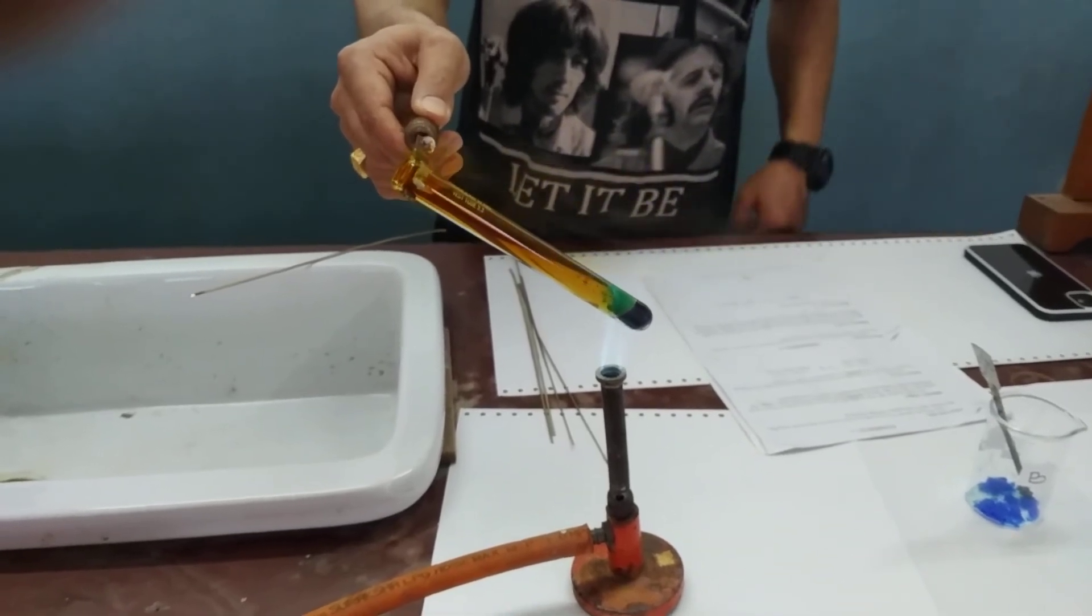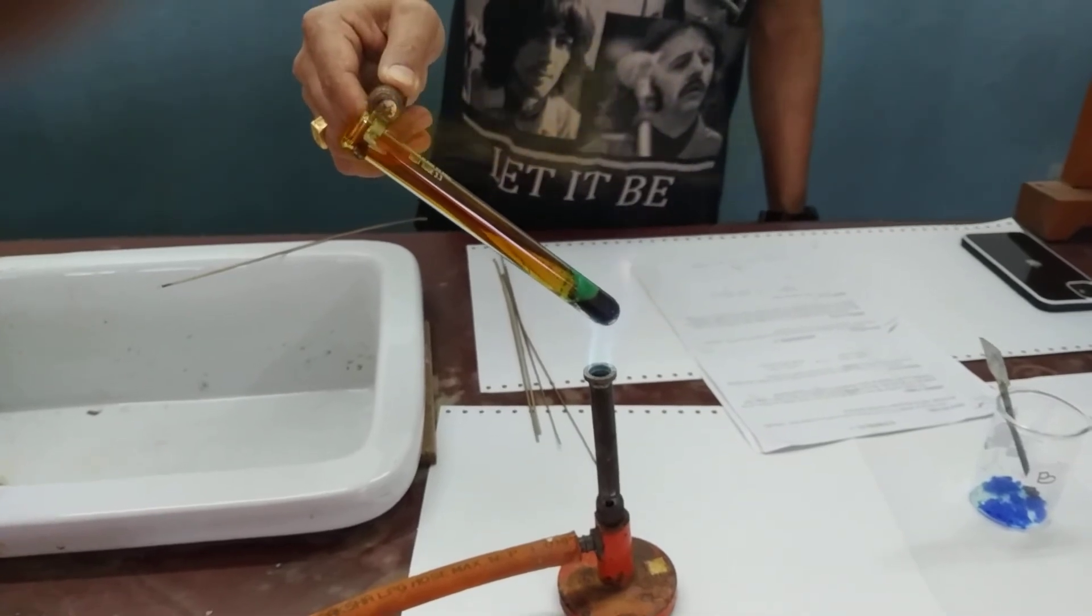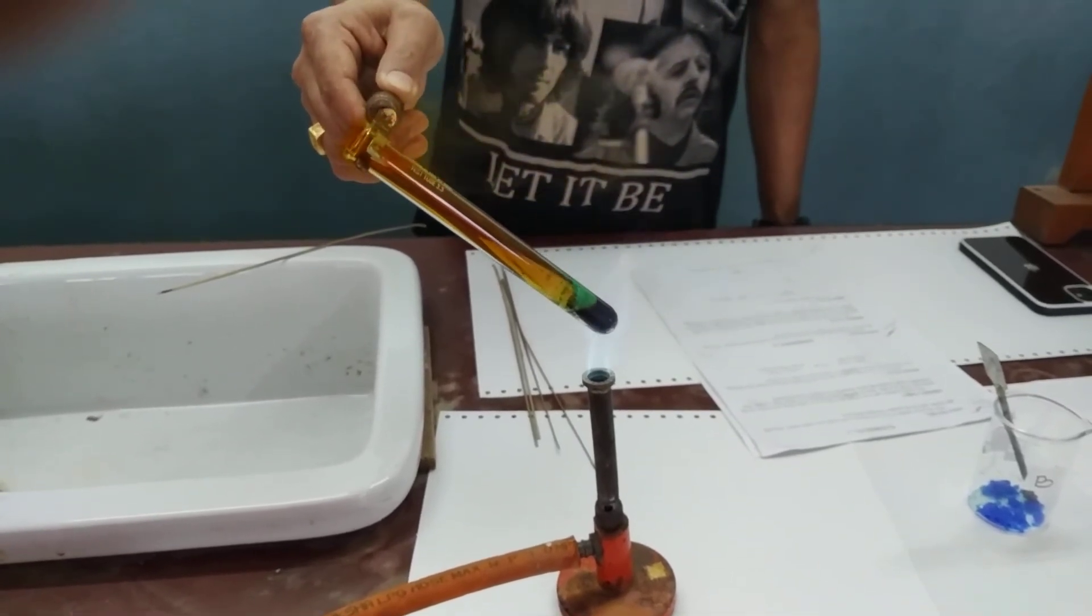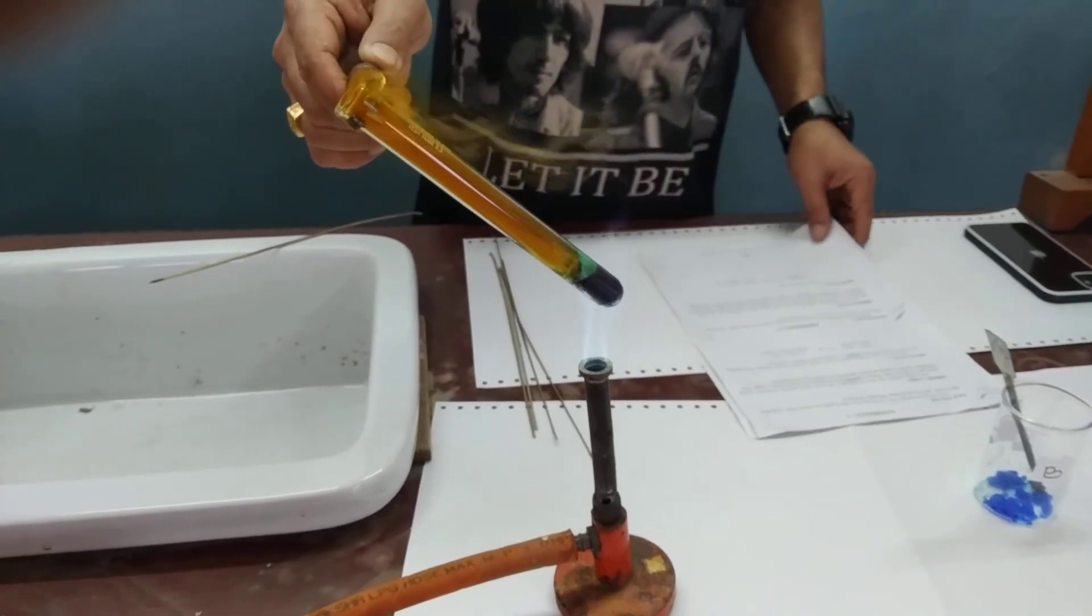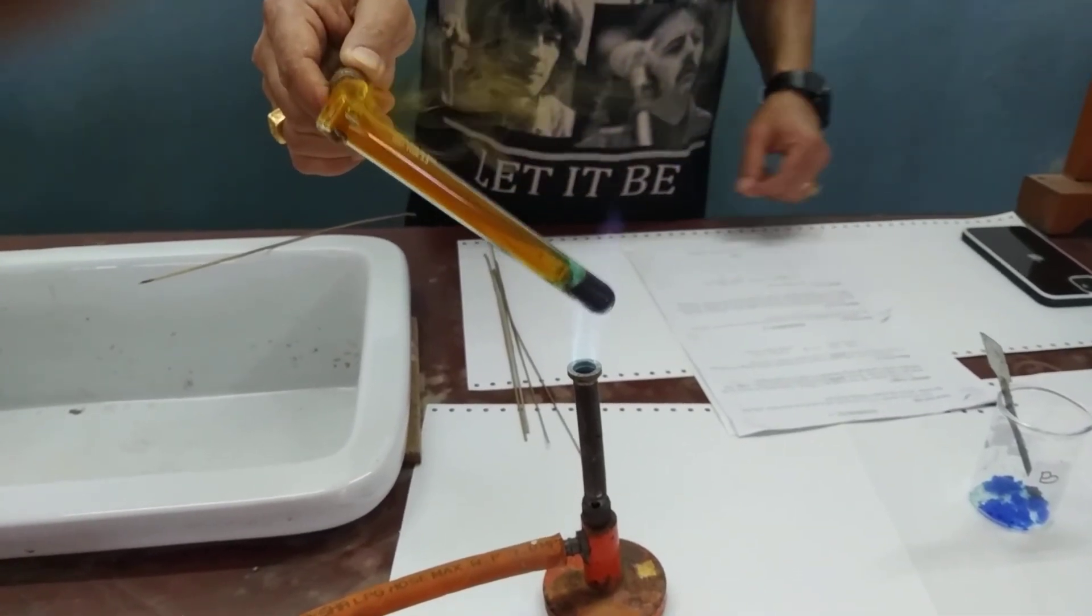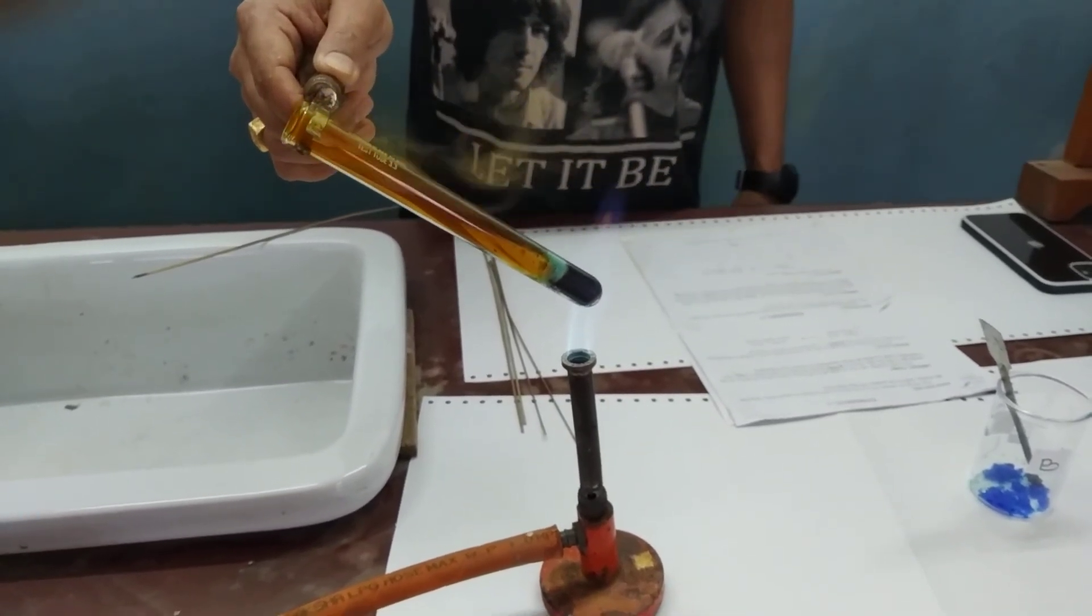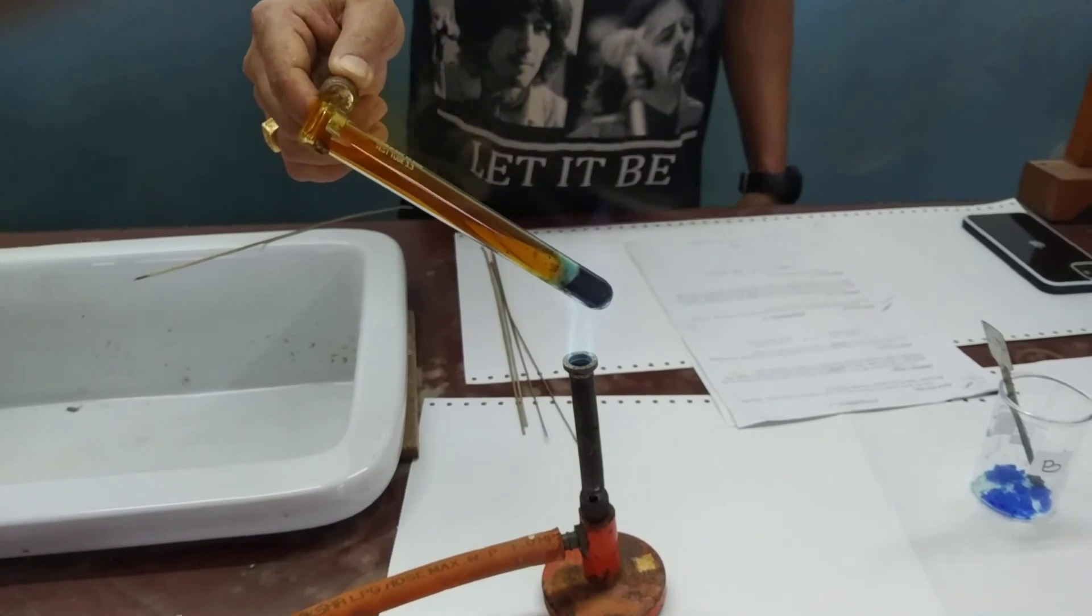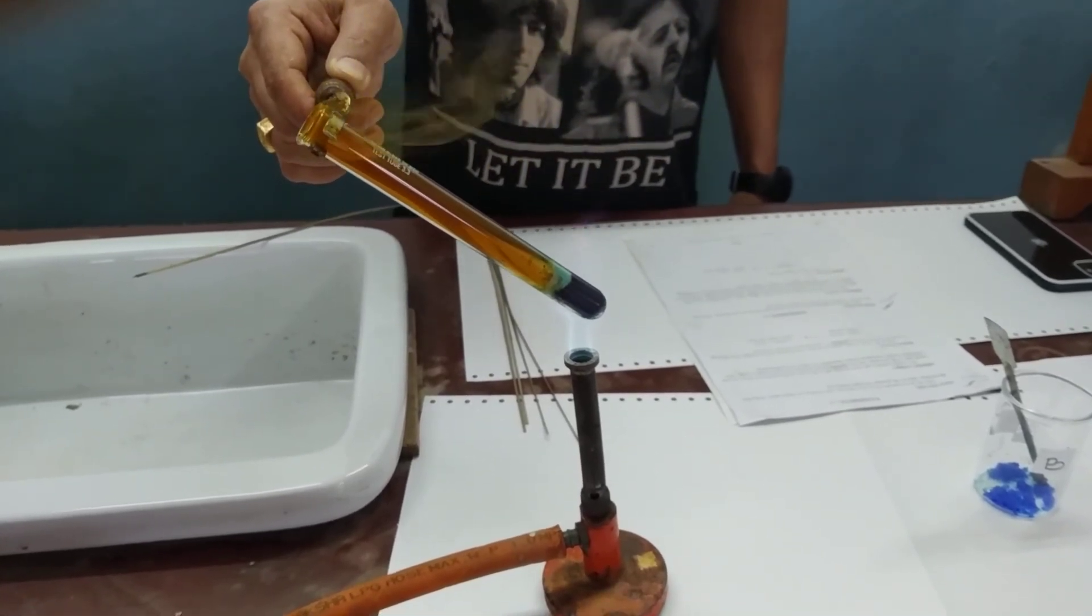From this experiment, we can conclude that the given salt is copper nitrate. The salt was blue in color, and since it produces nitrogen dioxide gas, it must be a nitrate. Therefore, sample B is copper nitrate.